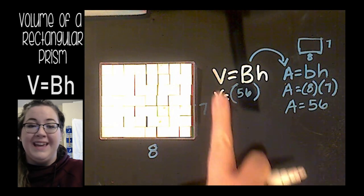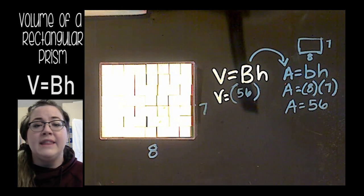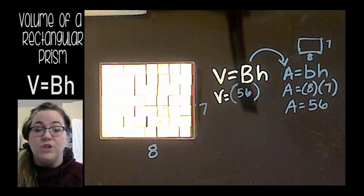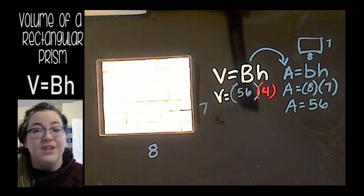V equals my big B, area of the base is 56. My height is the height of the prism. Well, the height of my prism is how tall it is, or how many layers it has. You can think of it like that too.